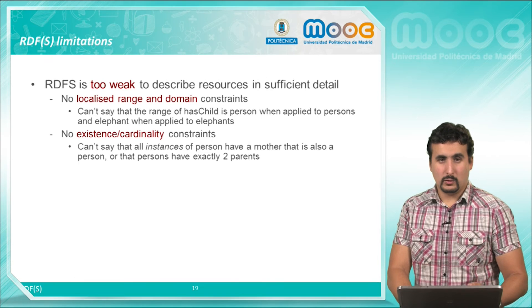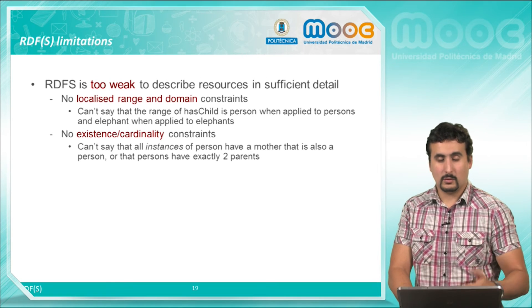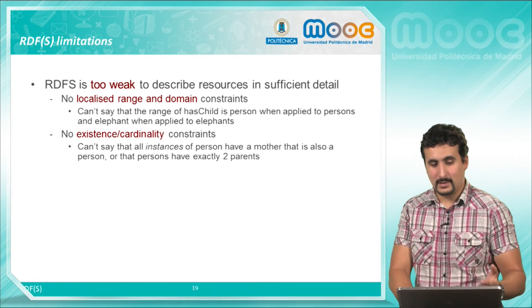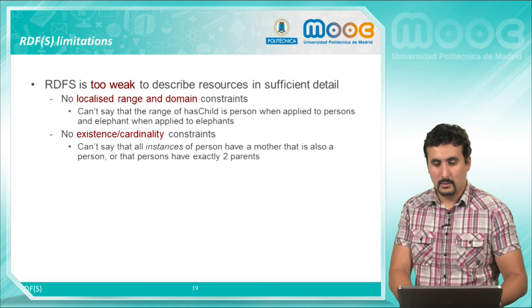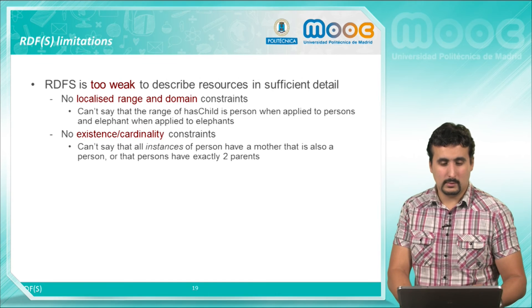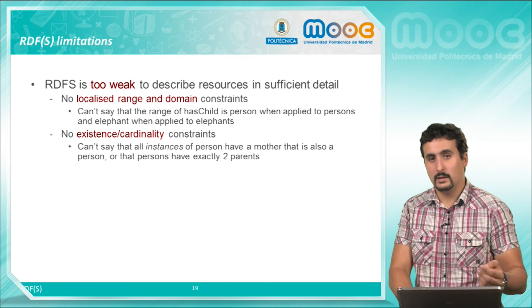We cannot introduce existence or cardinality constraints, that is we cannot say that all instances of a person have a mother that is also a person in this case, or that a person has exactly two parents.